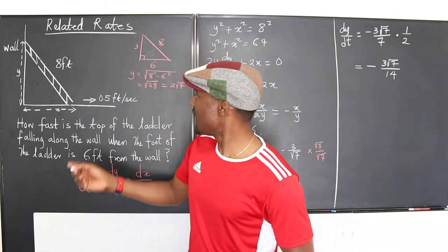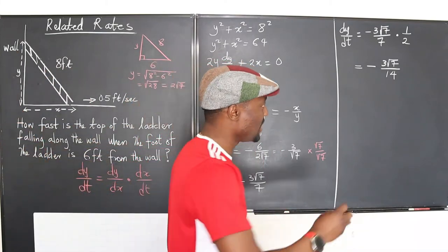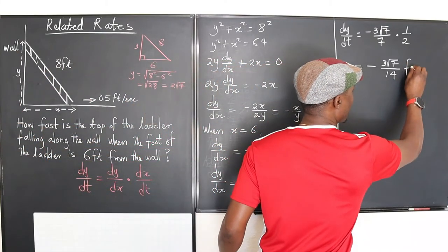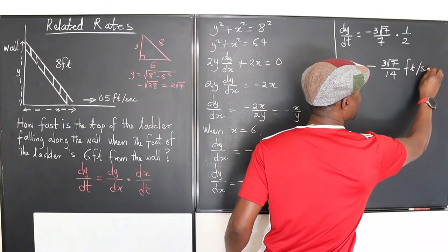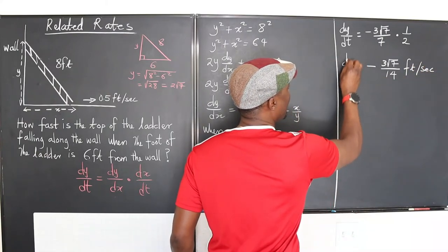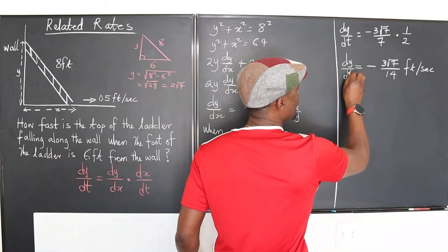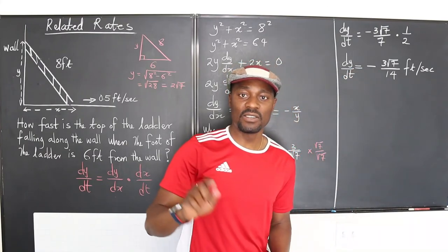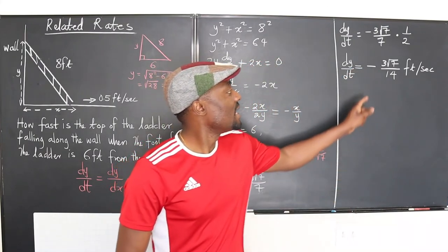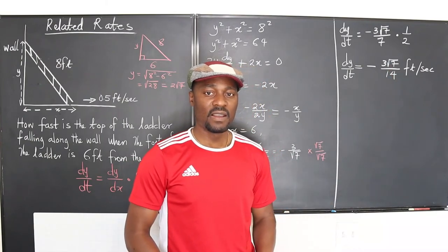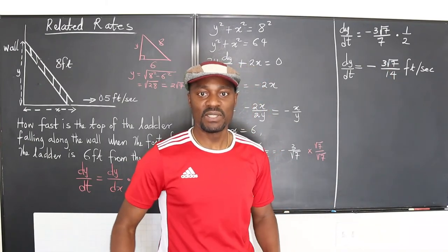Because y is measured in feet also, it's going to be feet per second. That's dy/dt. So we say the ladder is falling at the rate of negative 3√7 over 14 feet per second.